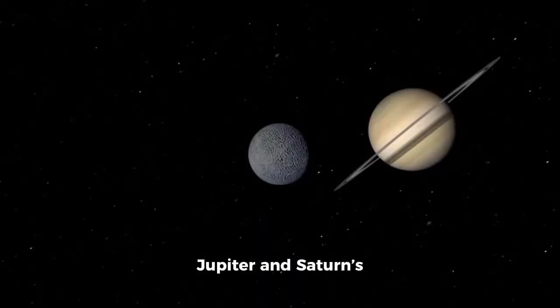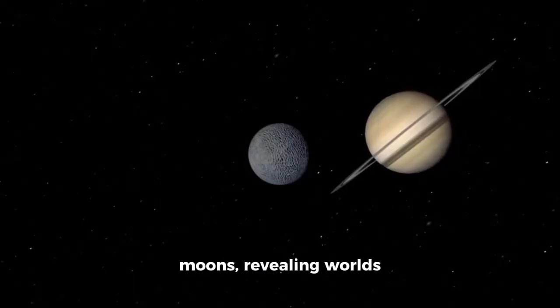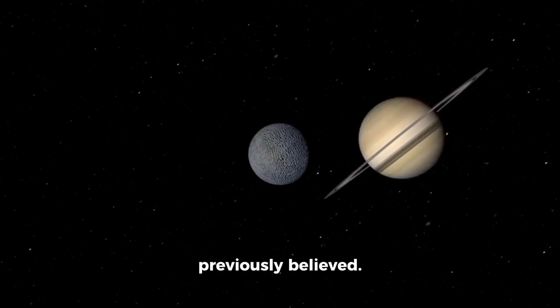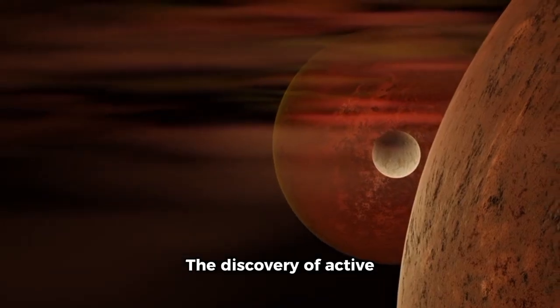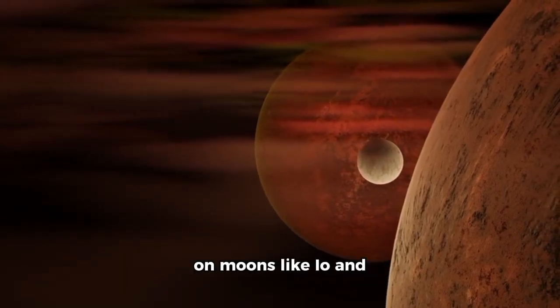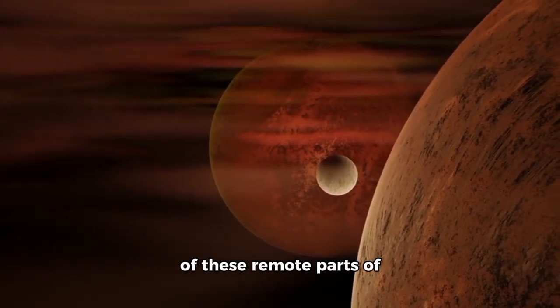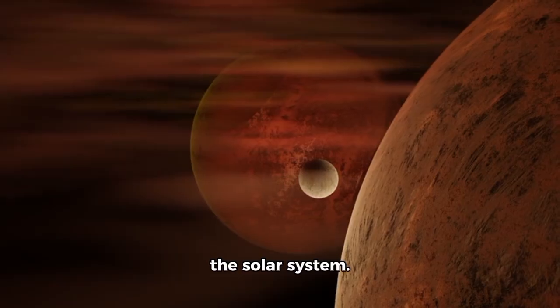Early in their voyages, they provided stunning close-up photographs of Jupiter and Saturn's moons, revealing worlds that were far more dynamic and active than previously believed. The discovery of active volcanoes and ice fields on moons like Io and Enceladus completely altered our understanding of these remote parts of the solar system.